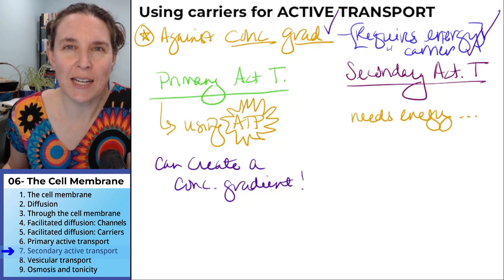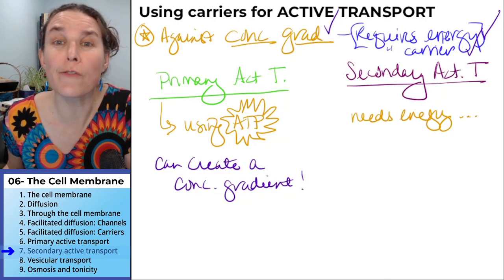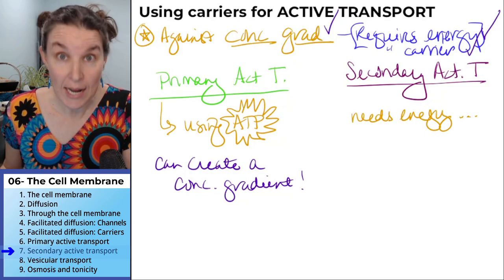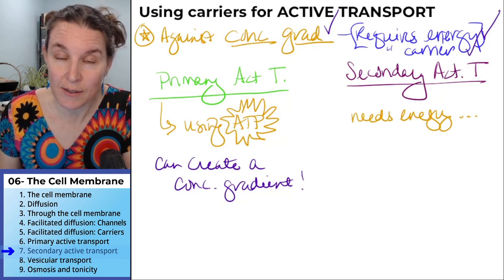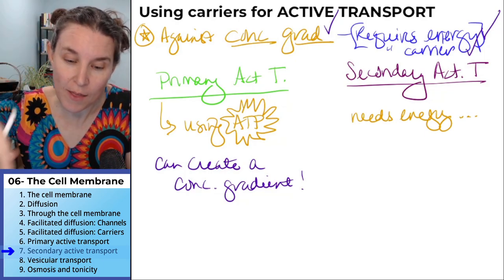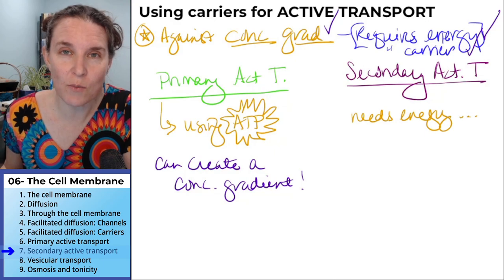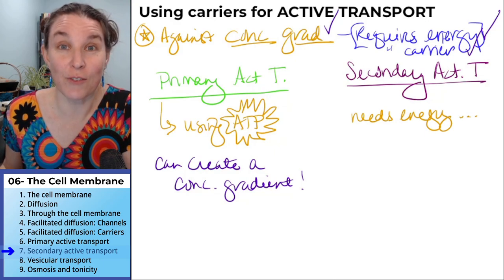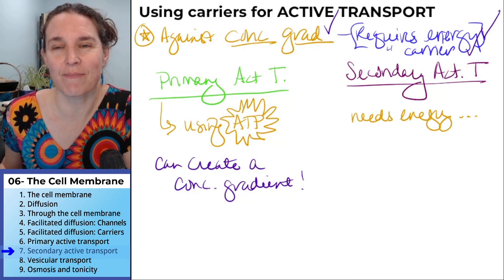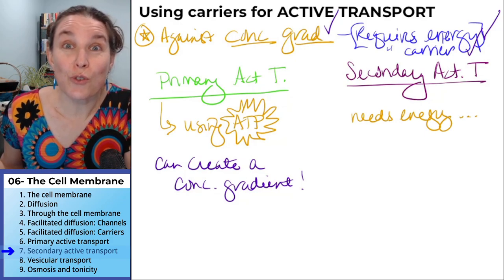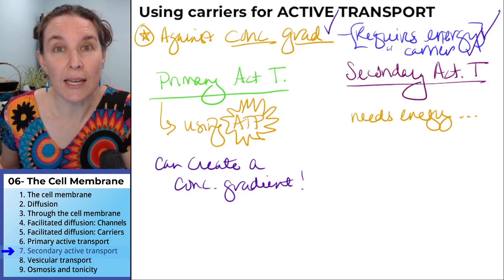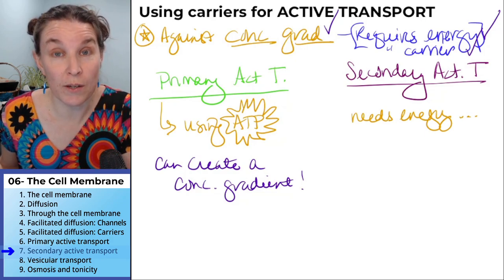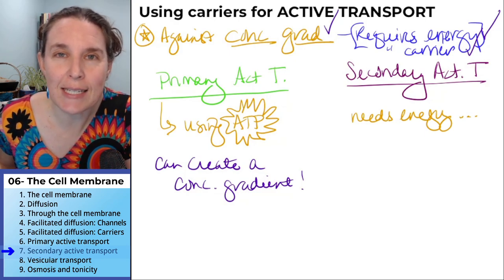And if you had to take a wild guess — true or false — you're going to bet whatever dessert you're having tonight on this. Put it on the table. If you get this right, you get the dessert. If you get it wrong, I get the dessert. Here's the true-false question: Secondary active transport needs energy in the form of ATP.